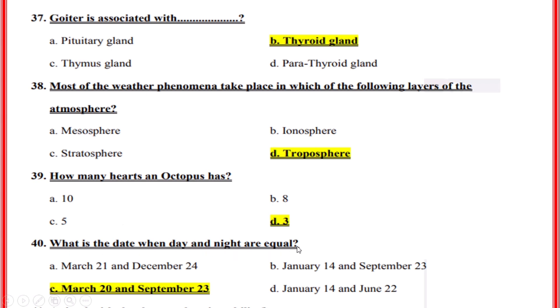On which dates are day and night equal? Correct option: C, March 20th and September 23rd.